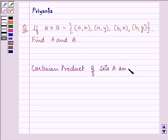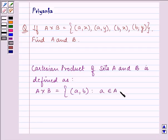Cartesian product of sets A and B is defined as: A cross B equals the ordered pair (a,b) where a belongs to set A and b belongs to set B.